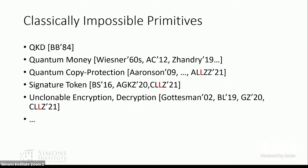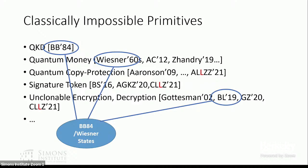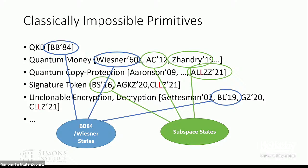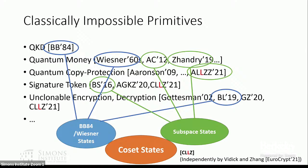These applications rely on some forms of unclonability of certain quantum states. Famous examples include the BB84 states, the Wiesner states, and subspace states. More recently, with Andrew and others, we gave a unified, generalized notion called coset states, which possess many important properties of both BB84 states and subspace states.